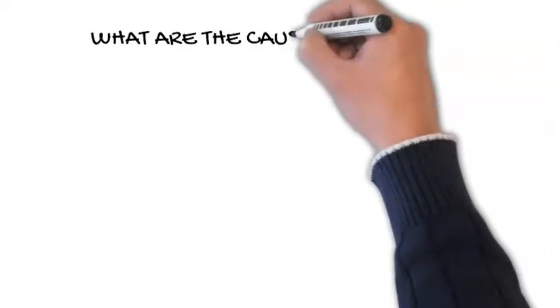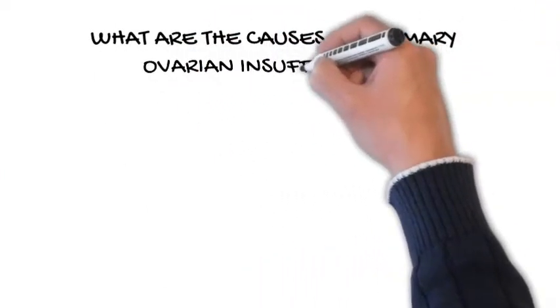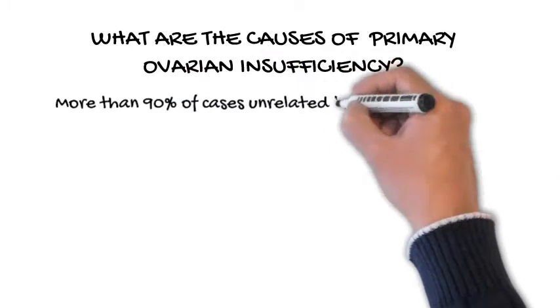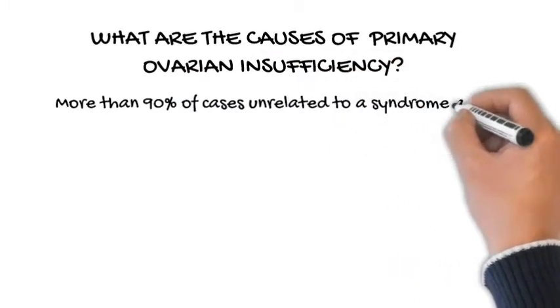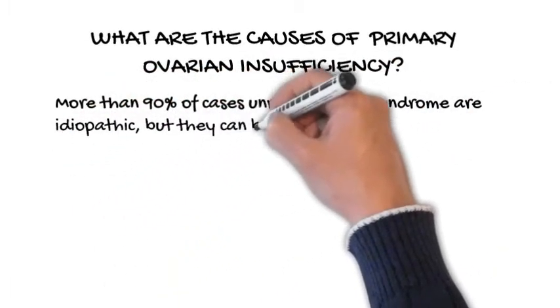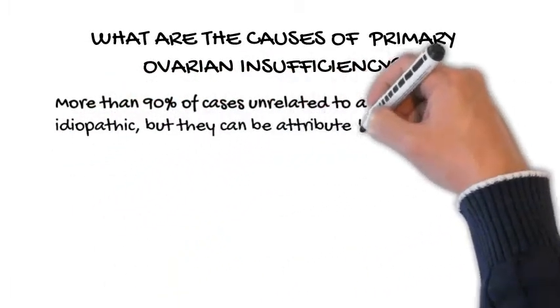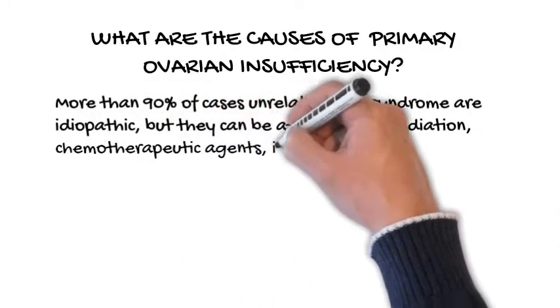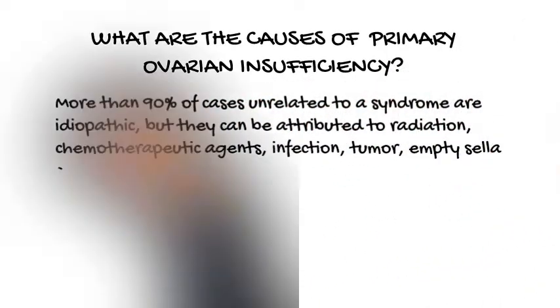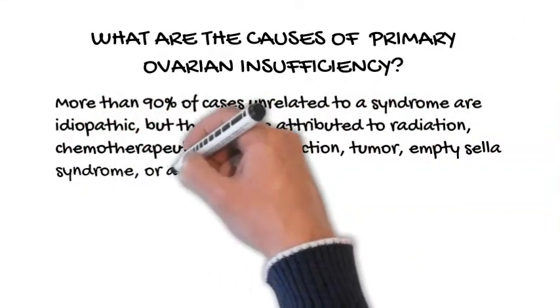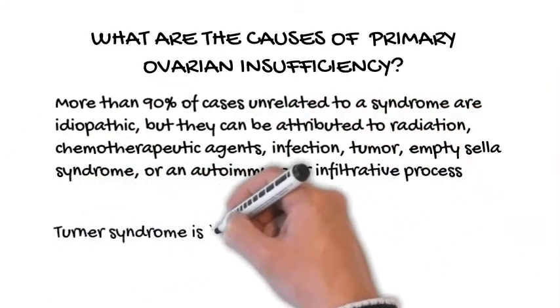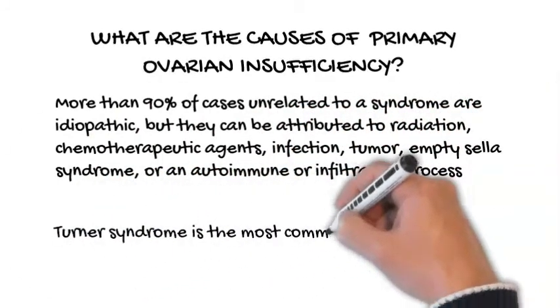What are the causes of primary ovarian insufficiency? More than 90% of cases unrelated to a syndrome are idiopathic, but they can be attributed to radiation, chemotherapeutic agents, infection, tumor, empty sella syndrome, or an autoimmune or infiltrative process. Turner syndrome is the most common congenital cause.